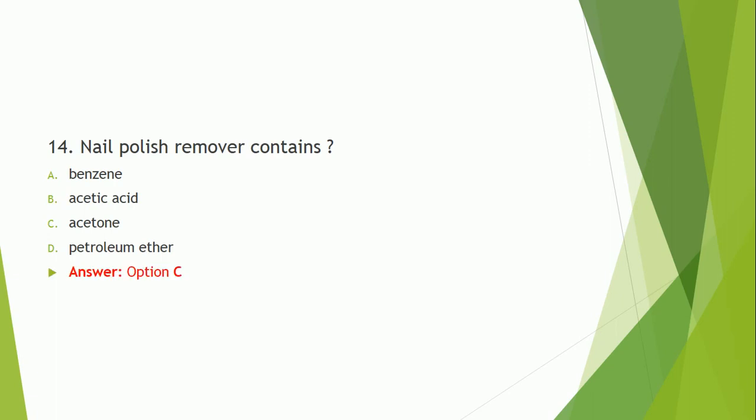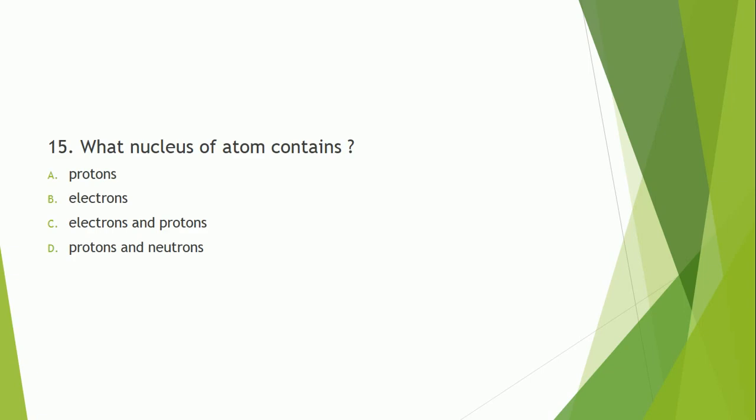Remember: acetone. Question number 15: What does the nucleus of an atom contain? The correct answer is option D — protons and neutrons. Electrons revolve around the atom.